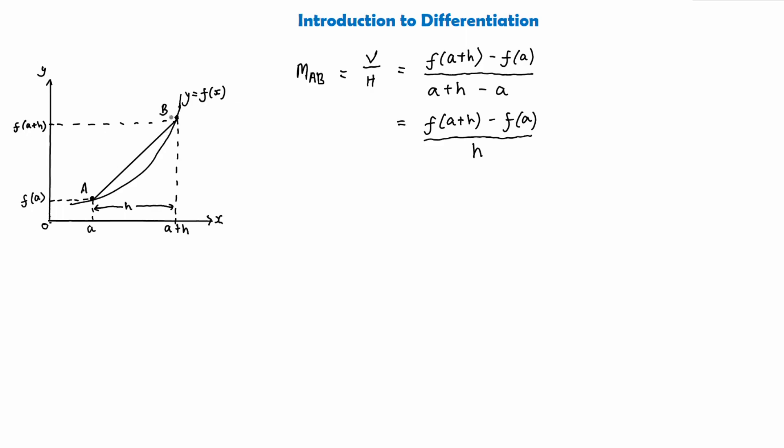To get a more accurate approximation, if we let this point B get closer and closer to A along the curve, so it gets closer and closer and closer to A, we would say that h is getting smaller, or